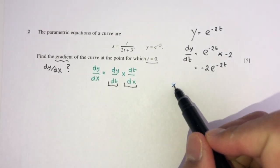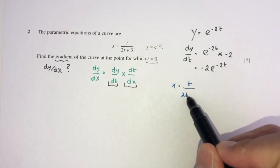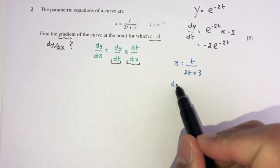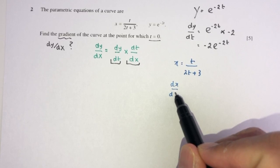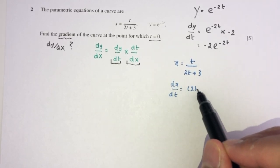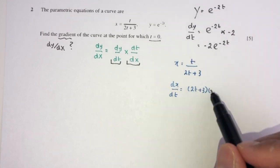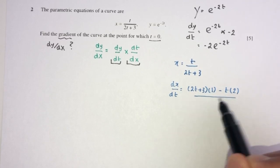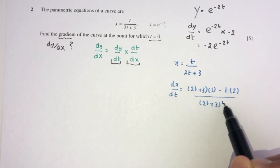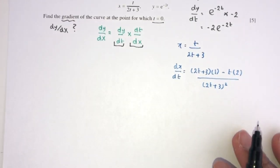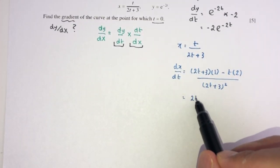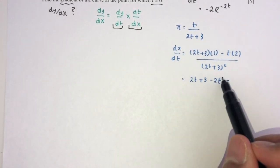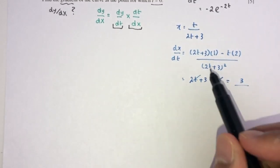For x = t/(2t + 3), this is a fraction so we use the quotient rule. That gives dx/dt = [(2t + 3)(1) − t(2)] / (2t + 3)². Simplifying the numerator: 2t + 3 − 2t = 3, so dx/dt = 3/(2t + 3)².